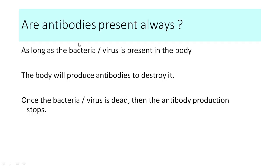In an immunoassay, we test whether a person has antibodies to a specific antigen. If present, we say the person is infected; if absent, no infection. Are antibodies always present? As long as the infection is active, antigens are present and the immune system keeps producing antibodies. Once the bacteria or virus dies and the person recovers, the antigens are gone and antibody production stops. For example, a typhoid patient will have antibodies against typhoid bacteria, but one month after successful treatment, the test result will be negative.